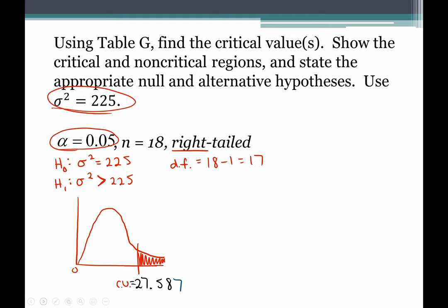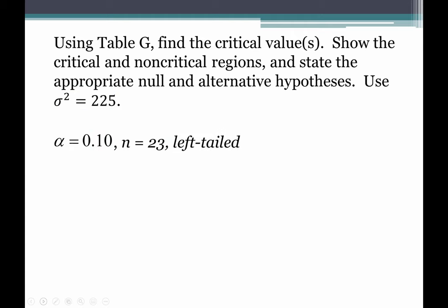Next up: left-tailed test. We're still using little sigma-squared = 225, now with a left-tailed test. For the hypotheses: H₀: σ² = 225, H₁: σ² < 225. Degrees of freedom = sample size minus one. For a left-tailed test, we have to get ourselves to the left side of the distribution. In order to do that, we have to do 1 minus our alpha. So we're going to do 1 − 0.10.